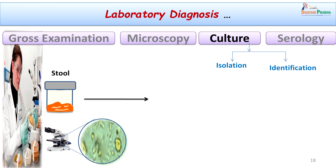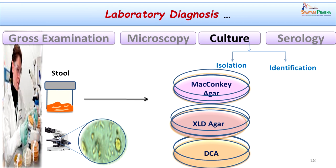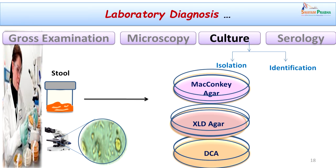To grow the organisms, we need to select appropriate selective media because the stool specimen contains many commensals, and we want to target only the pathogens. The first and most commonly used medium is MacConkey agar — a moderately selective medium containing bile salts that inhibits gram-positive organisms and other commensals while allowing pathogen growth. Two highly selective media for Salmonella and Shigella are XLD agar and DCA agar. We inoculated the specimen onto all three media and incubated at 37 degrees Celsius overnight.